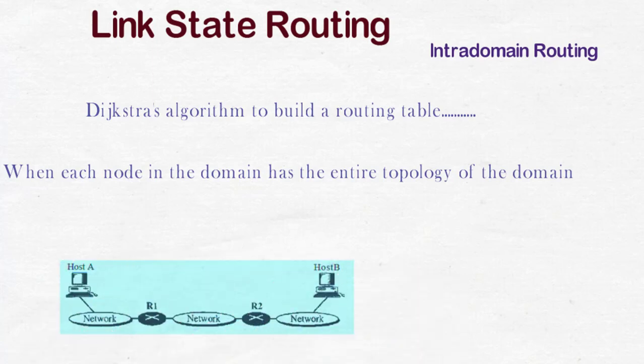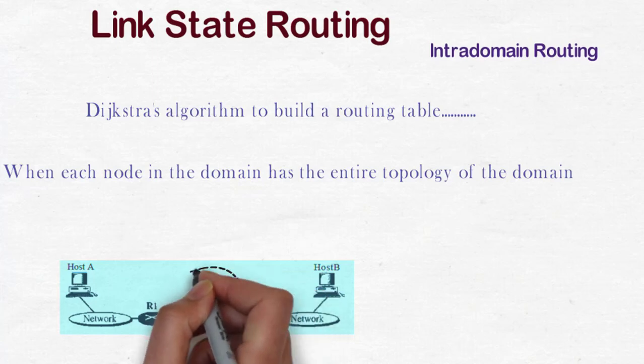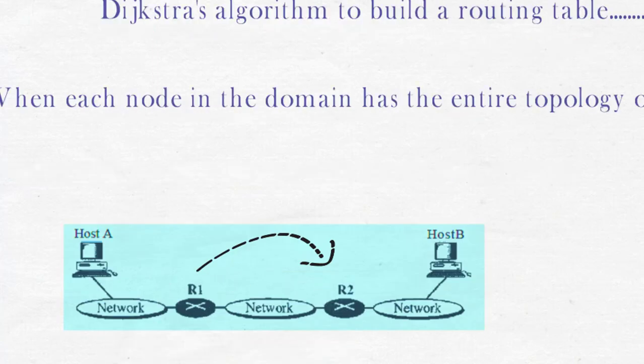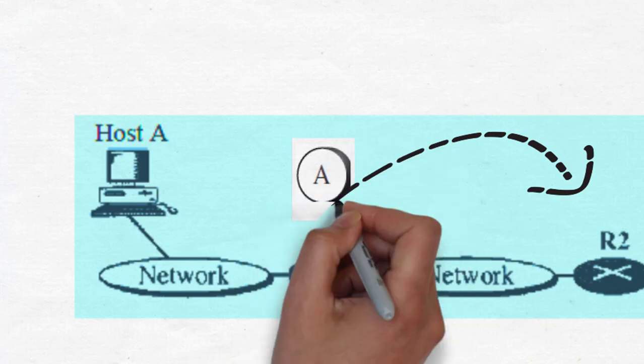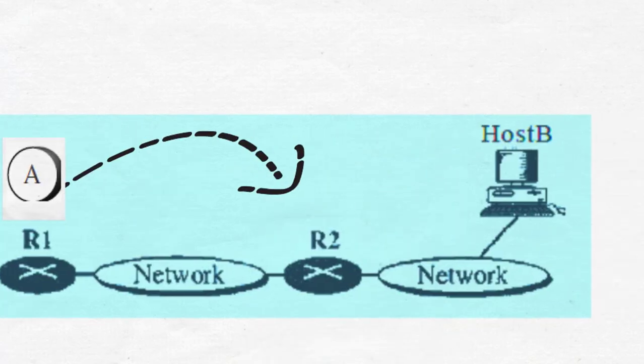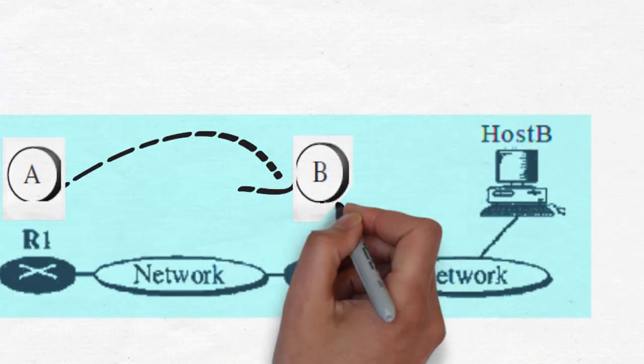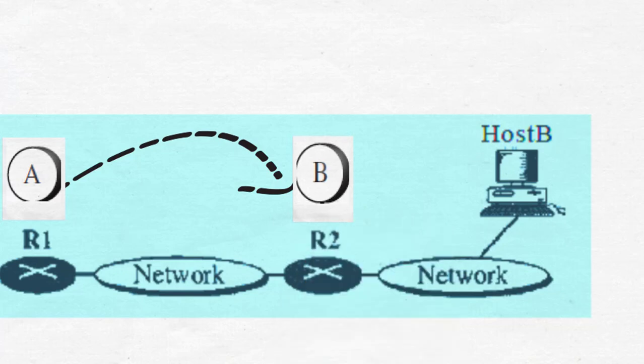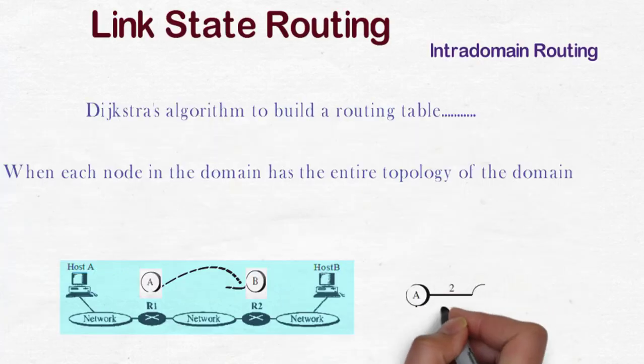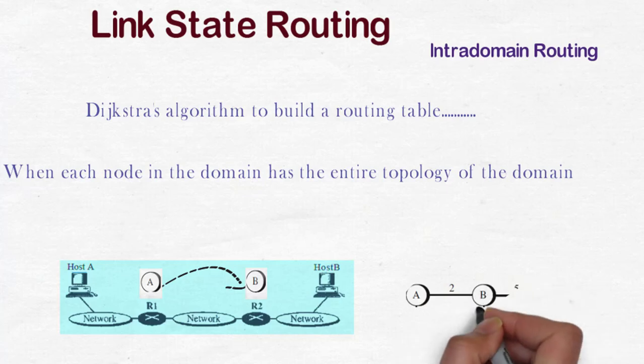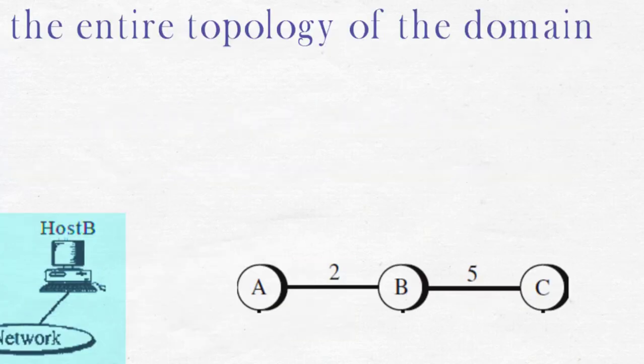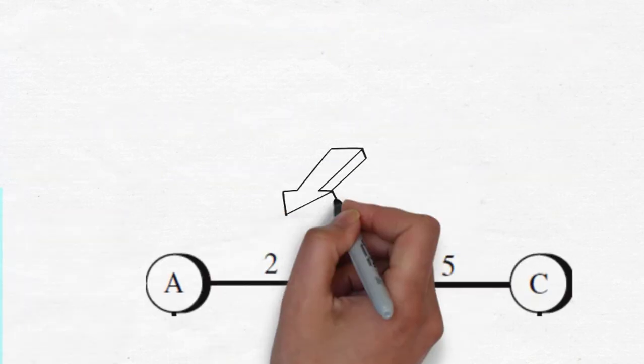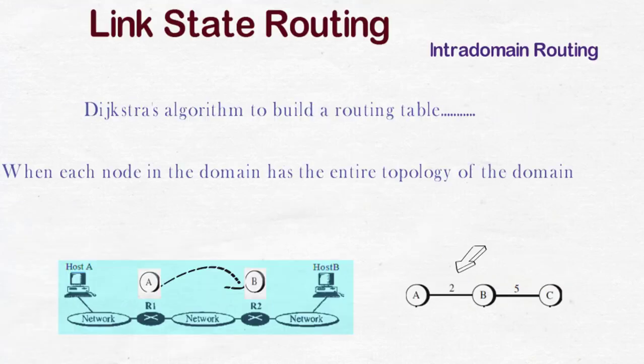The objective of this technique is to find a shortest path, or we can say the least cost path, from a node (a router) to another router when a packet is transmitted from source to destination. There are routers connecting several individual networks in an intra-network system, and nodes here representing routers. The numerical values on the links are costs, the metric in between the nodes.